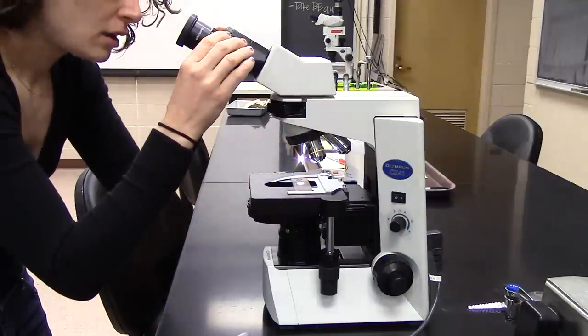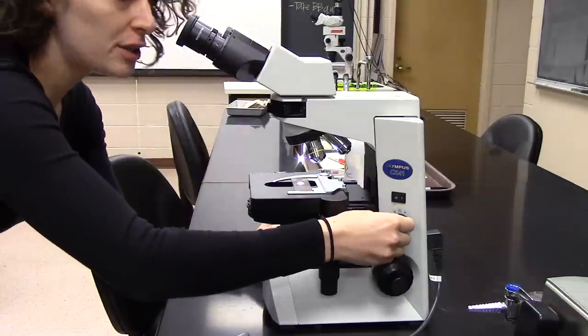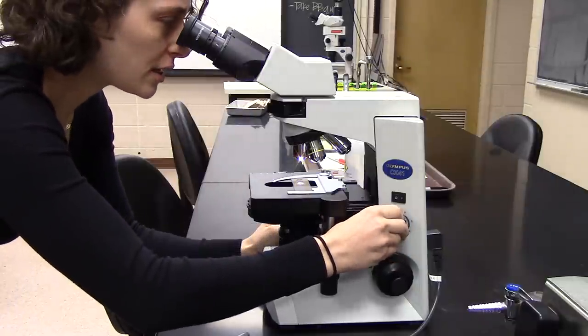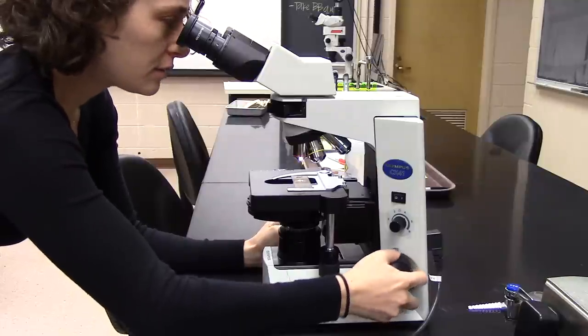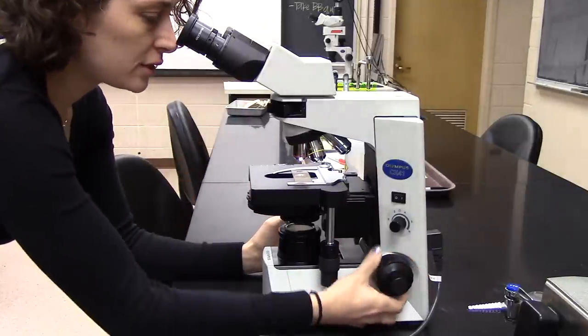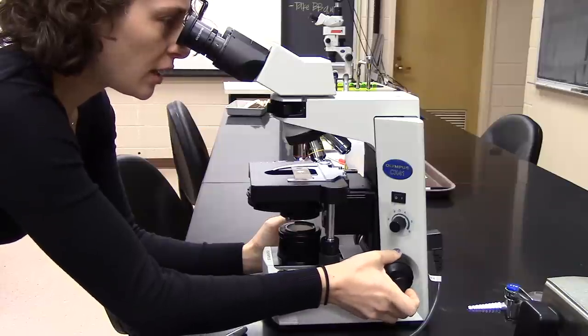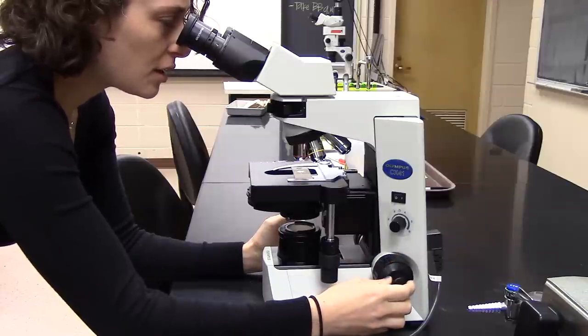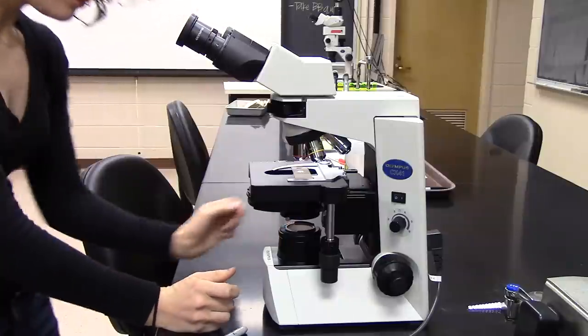Once you have that, you can look in. It's way too bright for my eyes; it's hurting them, so I'll turn the light down. Adjust the light to something that's comfortable, and then use the focus to slowly bring the stage up with the coarse focus knob, the large knob here, until you can see your X clearly. Then you can use the fine focus to do further adjustment if needed.